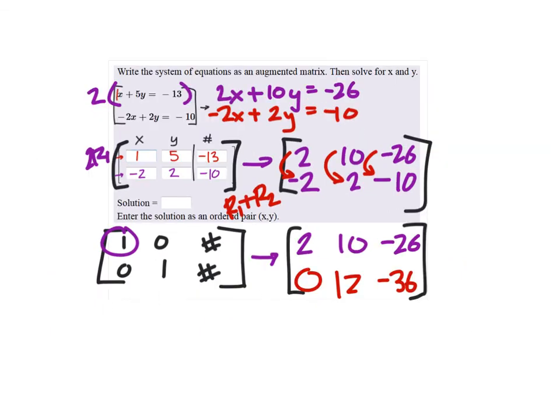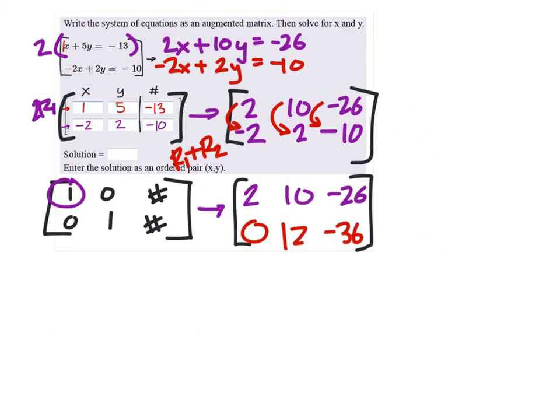And negative twenty-six plus negative ten is a negative thirty-six. So, twelve y equals negative thirty-six. If we were to change this now, that bottom row, back into an equation, which we're not going to do because we want to use elementary row operations, but that would be twelve y equals negative thirty-six. What would you do to solve for y?